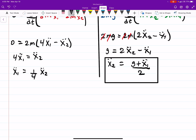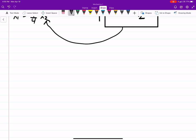So x1 double dot is one fourth times g plus x1 double dot over 2. Or if I just distribute that, that's going to be g plus x1 double dot over 8.